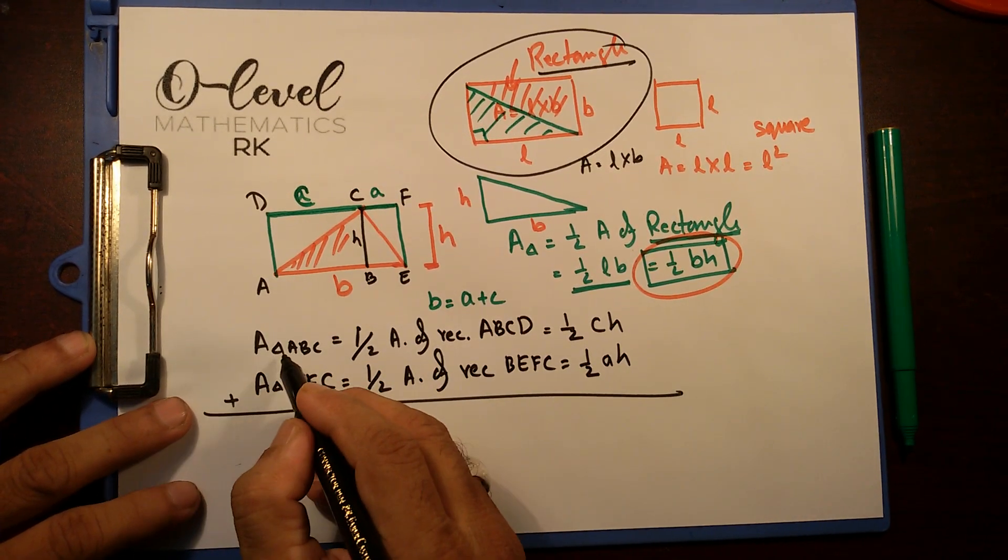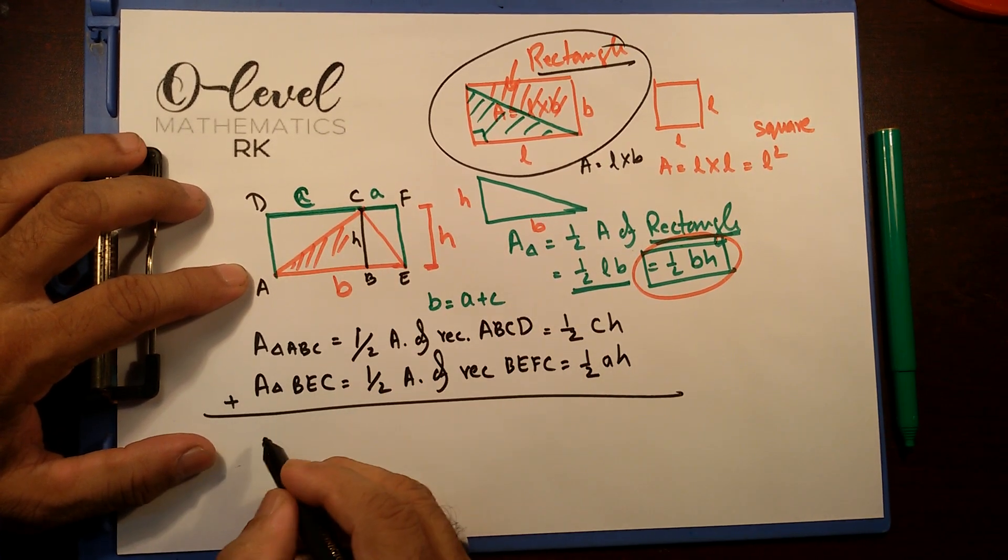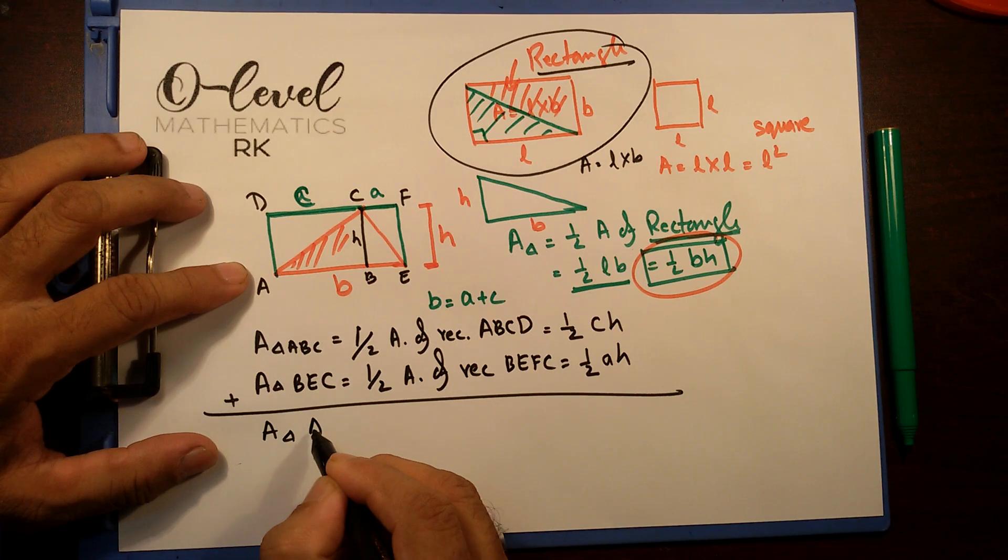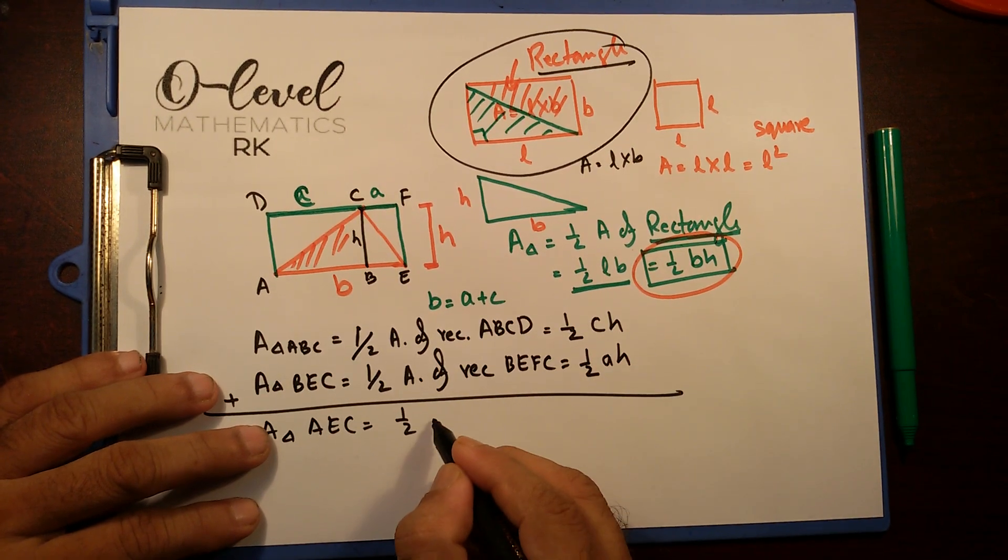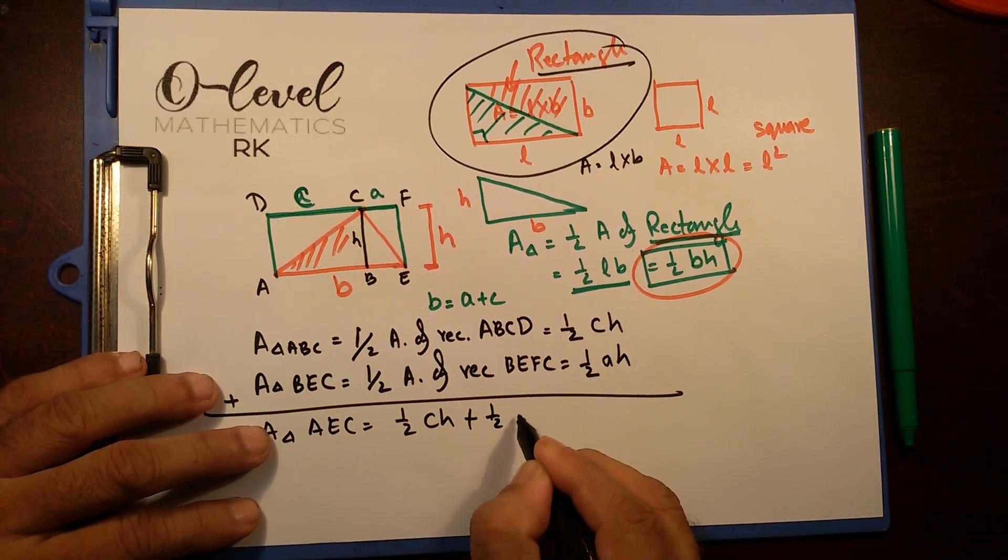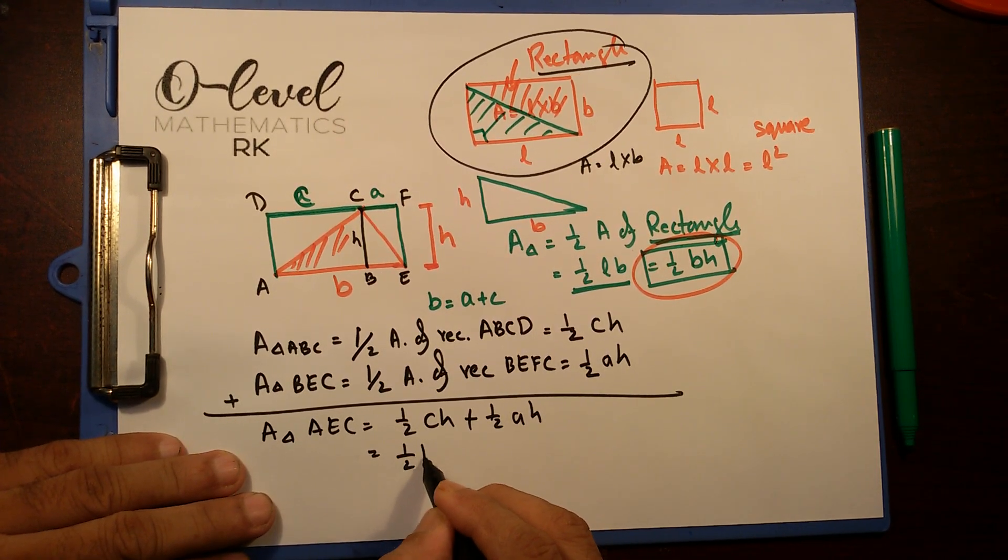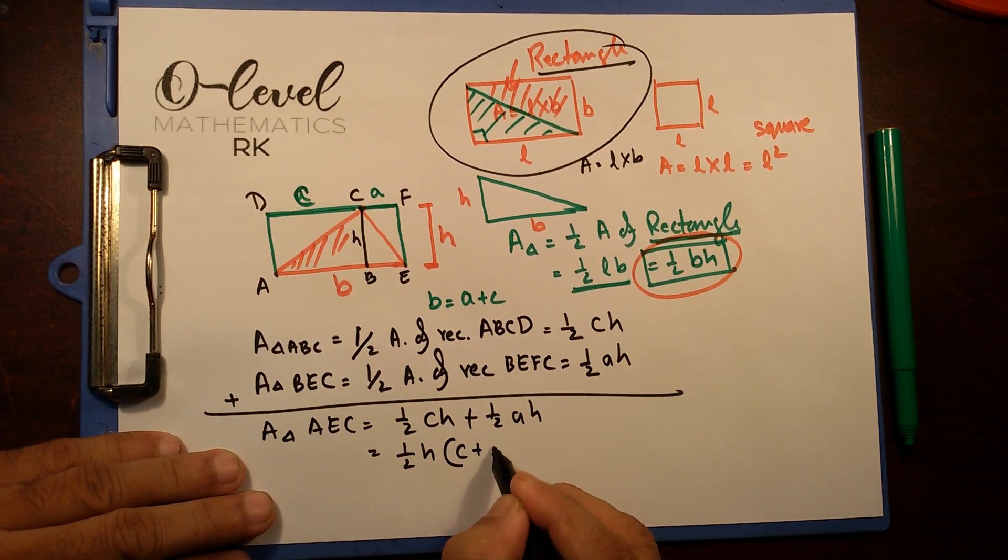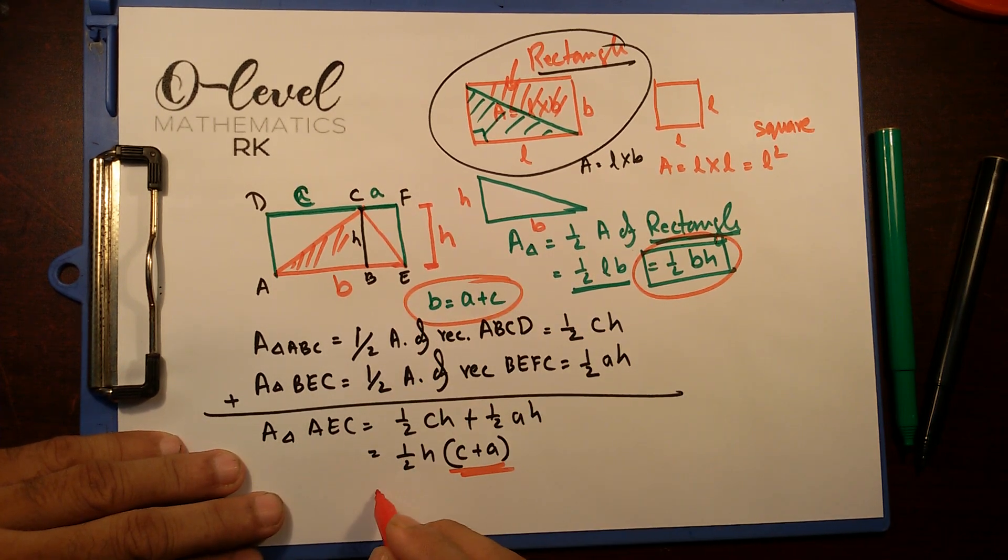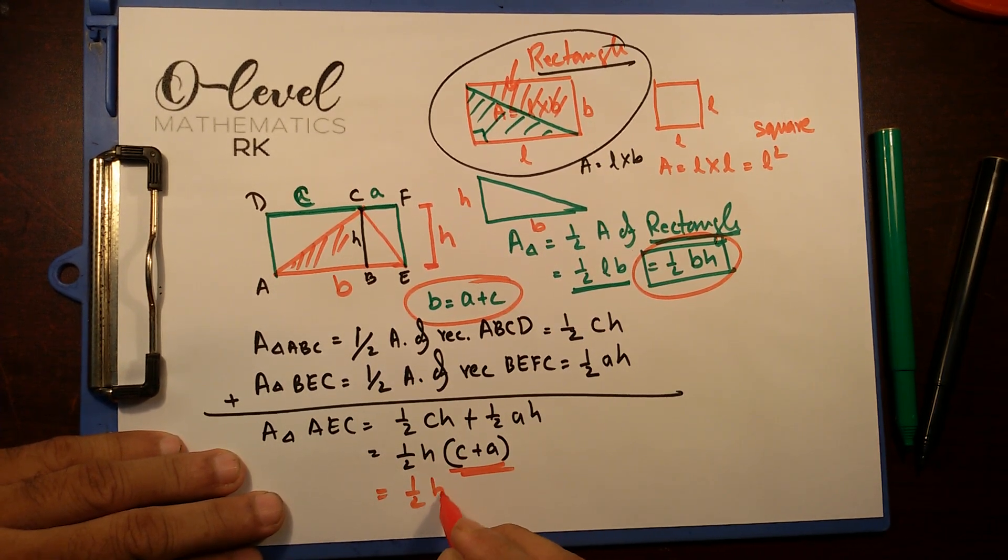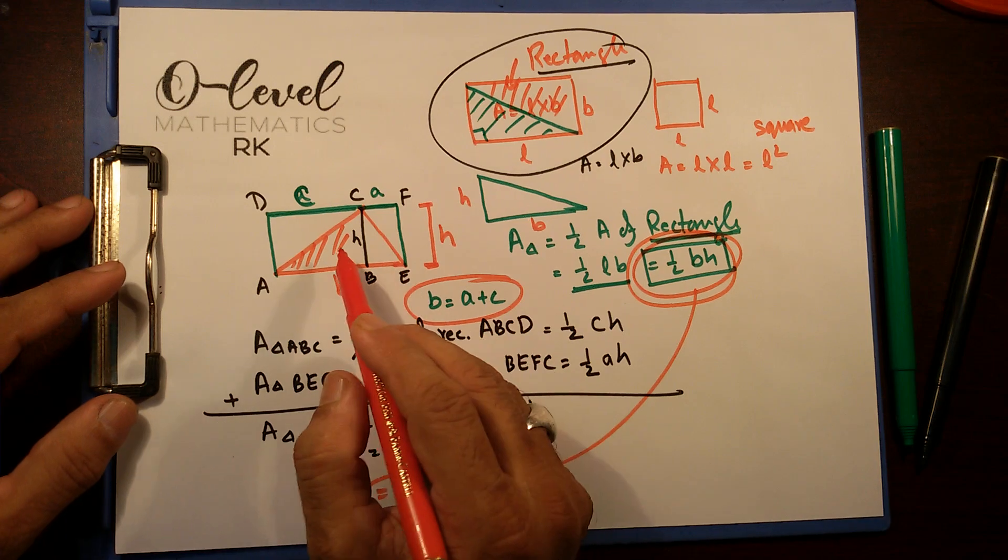Now, if I join these two triangles, triangle ABC and triangle BEC, I'm going to end up with area of triangle AEC. That's half CH plus half AH. If I take now half H common, half H, then I'm going to end up C plus A. And this C plus A is my B. So, that's going to be half base into height. Same formula as that one. So, this is how we find out area of triangle.